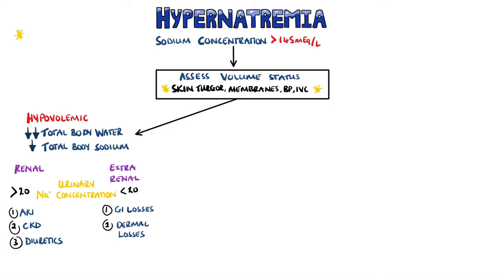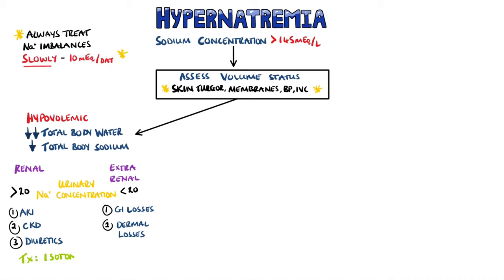Treatment for hypernatremia must always be done slowly, no more than 10 mEq per day. The therapy includes isotonic saline, or if the hypernatremia is too high, glucose solution.